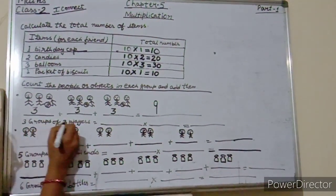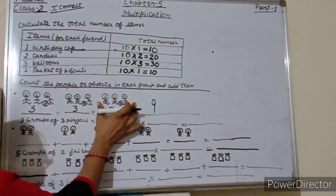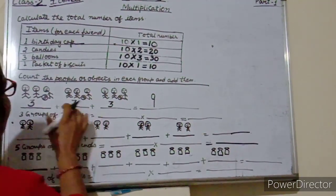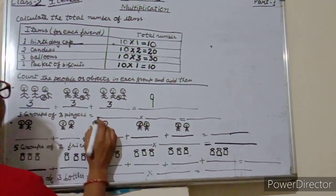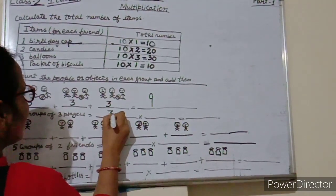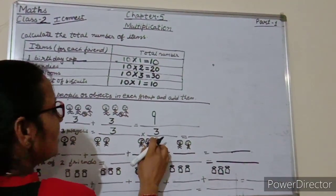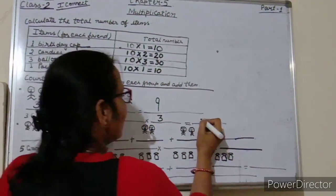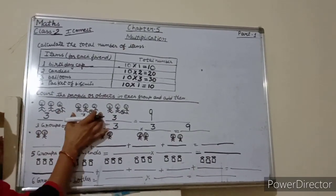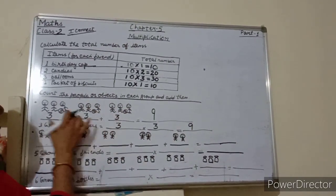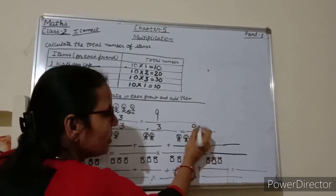So 3 groups of 3 players. How many groups are there? 1 group, 2 groups, 3 groups. In each group, 3 players are there. So here we write 3 into 3, and 3 into 3 is equals to 9. That means 3 players in 3 groups — 3 times 3 is equals to 9.